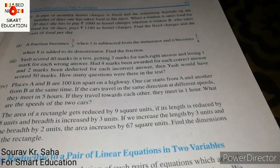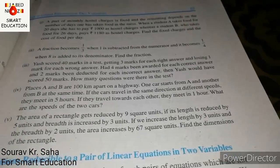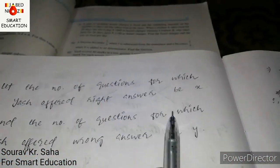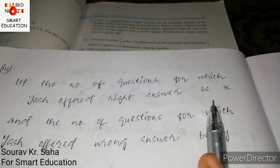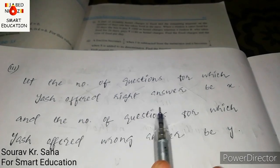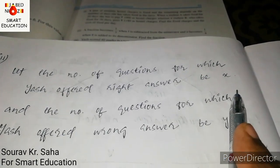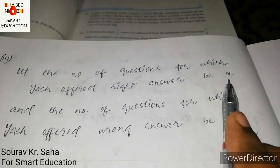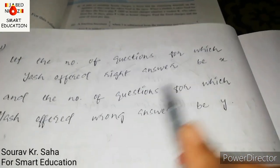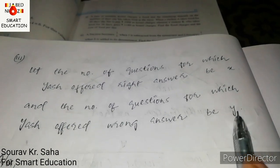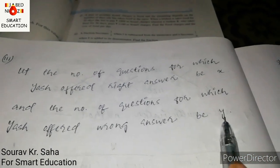To solve this, we define variables. Let the number of questions for which Yash gave the right answer be x. Suppose x is the number of correct answers and y is the number of wrong answers.